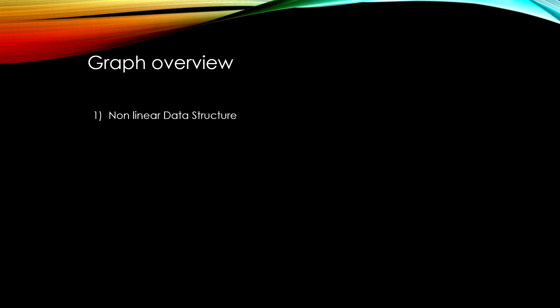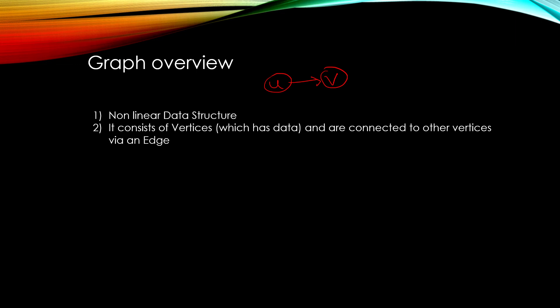A graph is a non-linear data structure. Previously we covered linear data structures like arrays, linked lists, stacks, and queues. We'll cover trees in the future, but all tree problems can be solved using graph theory. A graph consists of vertices — for example, vertex u connected to vertex v. Vertices contain data, and you can define your own data structure or use adjacency list and matrix representations.